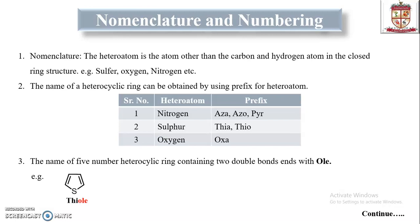Hello dear students. In the previous video we discussed the classification of chemical compounds in organic chemistry, as well as the role of IUPAC in chemistry. Now in this video we will discuss the nomenclature and numbering, specifically the nomenclature of heterocyclic compounds.